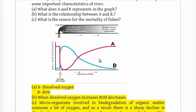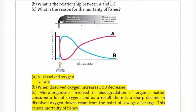The reason for mortality of fishes after sewage discharge is that microorganisms involved in biodegradation of organic matter consume a lot of oxygen, causing a sharp decline in dissolved oxygen downstream from the point of sewage discharge, which causes fish mortality.